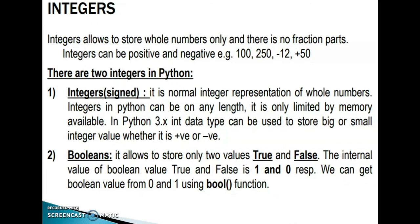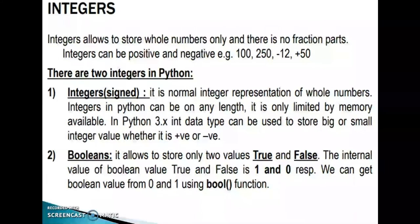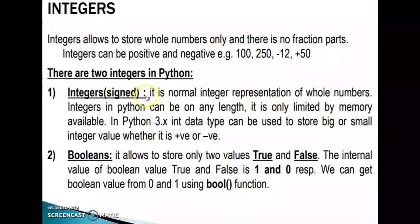Integers allow storing whole numbers only — there are no fractional parts. Only whole numbers can be stored in an integer variable. An integer value is a whole number with no fractional part. Integers can be positive and negative, for example: 100, 250, -12, +50, etc. There are two integer types in Python: signed integers and booleans.